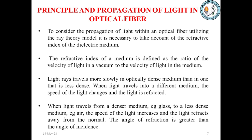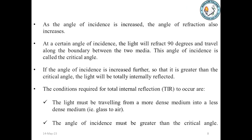When light travels into a different medium, the speed of light changes and the light is refracted. When light travels from a denser medium — for example, glass — to a less dense medium — for example, air — the speed of light increases and the light refracts away from the normal. The angle of refraction is greater than the angle of incidence. As the angle of incidence is increased, the angle of refraction also increases. At a certain angle of incidence, the light will refract at 90 degrees and travel along the boundary between the two media. This angle of incidence is called the critical angle.